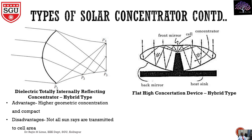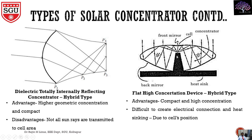The next one will be the flat high concentration device, which is also a hybrid type. Light will be refracted here, then reflected, and focused to this area — here only is the focal point. We can connect the PV panel here. Advantages are it is very compact and has high concentration since more areas are available, but it is difficult to create electrical connections in this design.